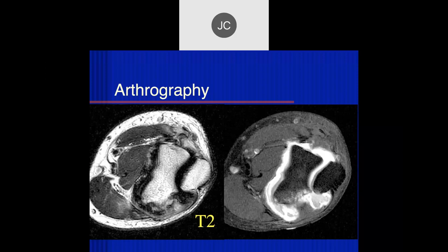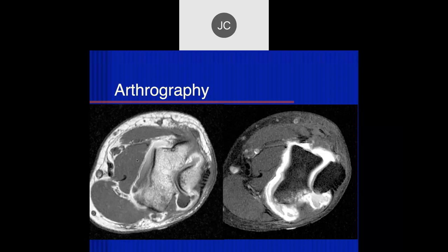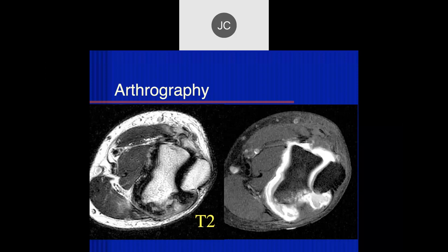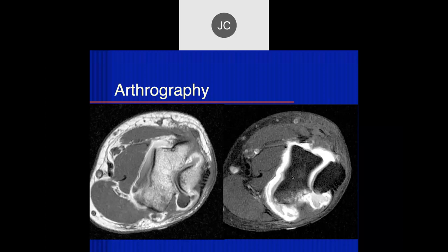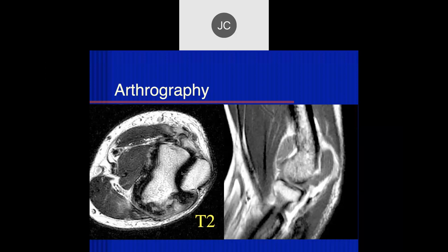I think I see some increased signal at the common flexor origin right over here. On the arthrography, you should have bright signal if you put in contrast. On the T1-weighted image we're getting bright signal, but on T2 it's very dark - so why are we not getting the expected contrast from the injection? It's too concentrated - this is a 1-to-1 dilution instead of the recommended 1-to-200 dilution.